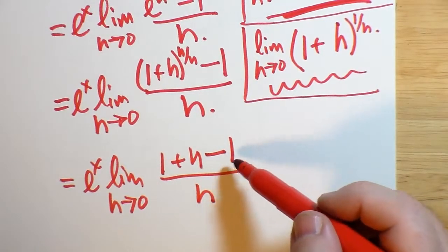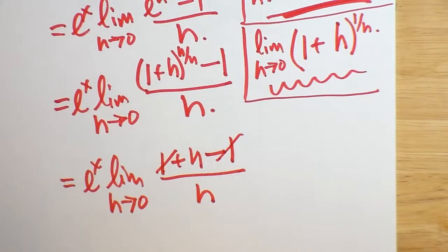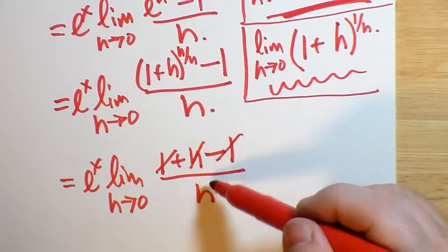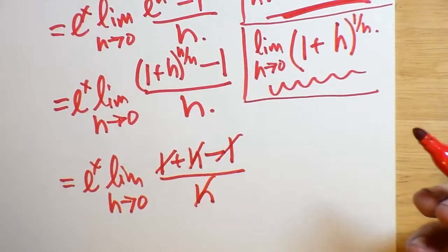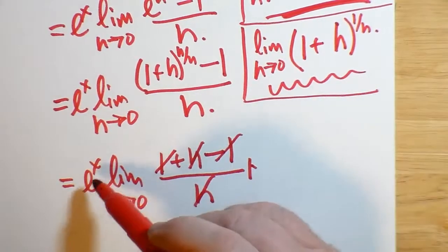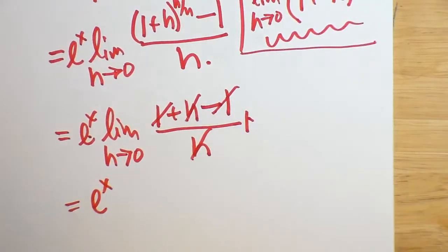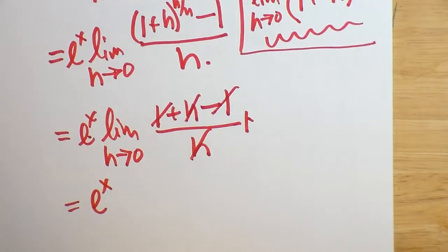Well, you can see here that this 1 cancels with this 1. Negative 1 and positive 1 go to 0. And this h cancels with this h. It's now the limit of a constant, 1. We end up with 1 times E to the x, which is simply E to the x. It's simply E to the x. That's all it is.